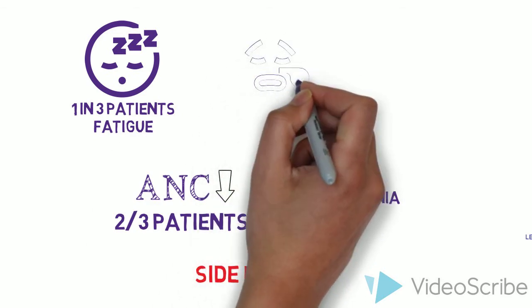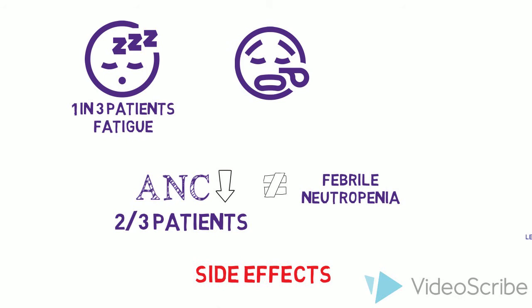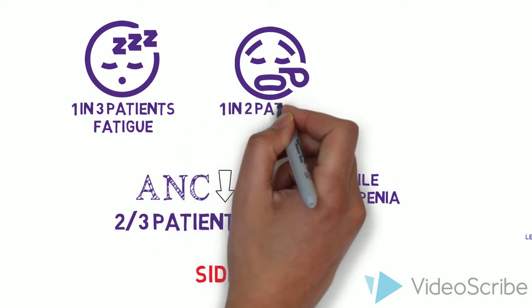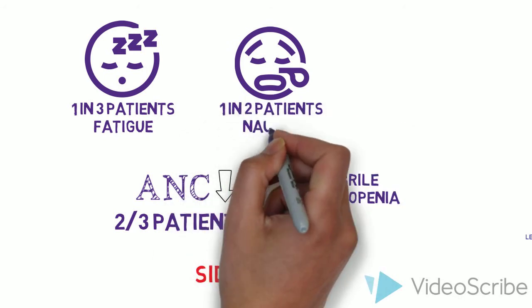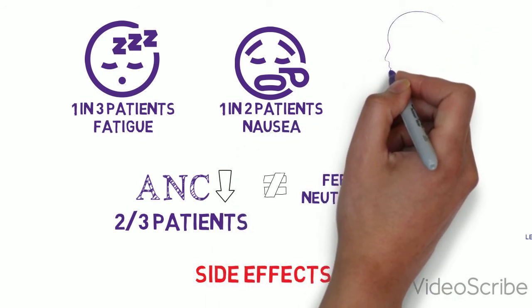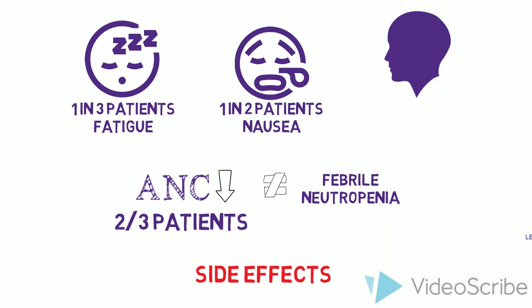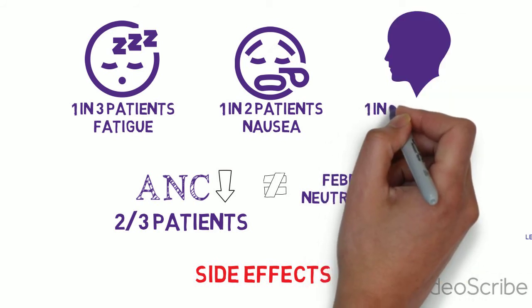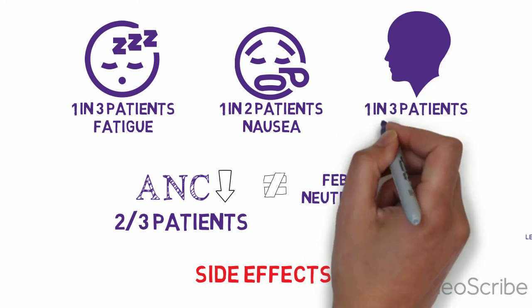Up to half of patients on palbocyclib and ribocyclib experienced nausea in trials compared with about a quarter of patients on the placebo and letrozole arms. And alopecia, although usually grade 1, was present in up to a third of patients compared with about a sixth of patients on letrozole alone.